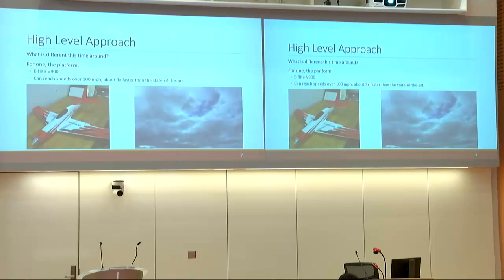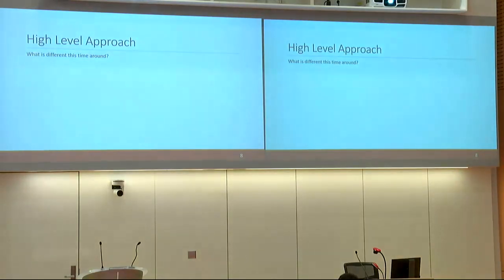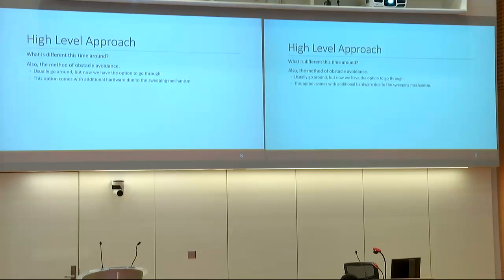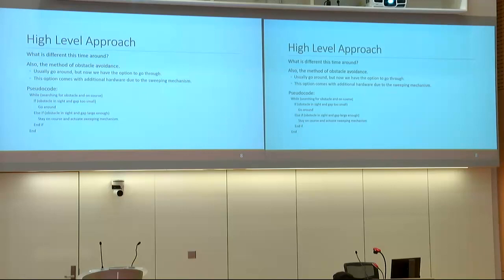Our means of obstacle avoidance is also different. Usually when avoiding an obstacle you go around or turn around, but what's different here is that we have the means to go through the obstacle — through gaps — by sweeping the wing backwards. The pseudocode is simple: while the airplane is flying and sees an obstacle, if the gap is too small it goes around; but if the gap is large enough to squeeze through, it retracts its wings and flies through.